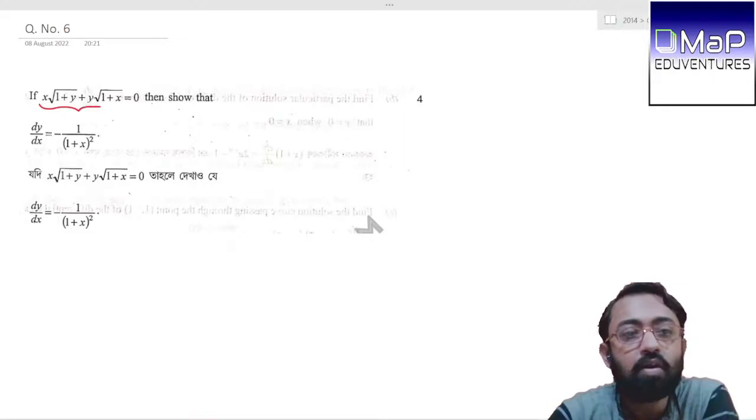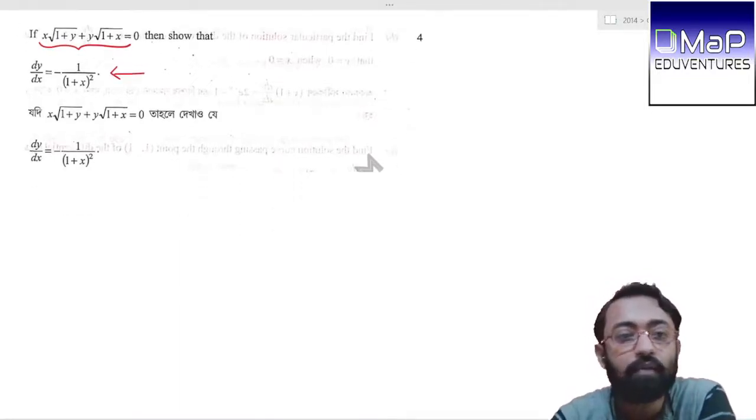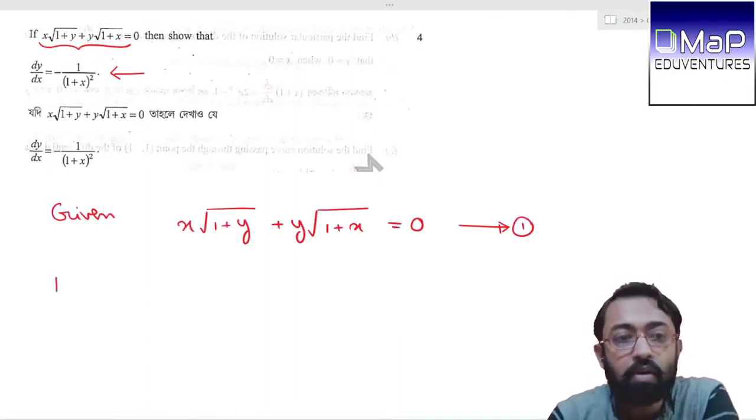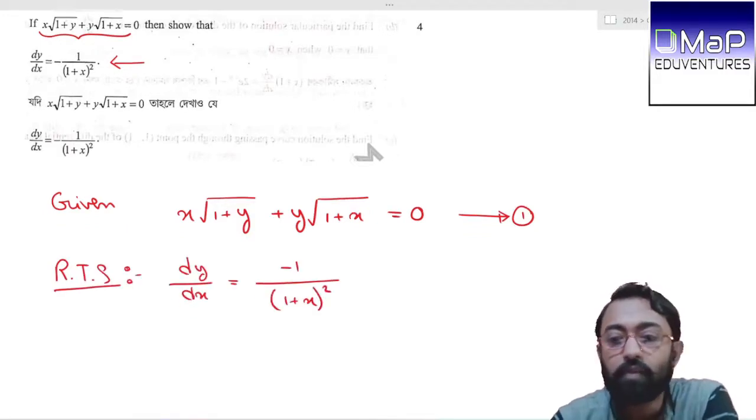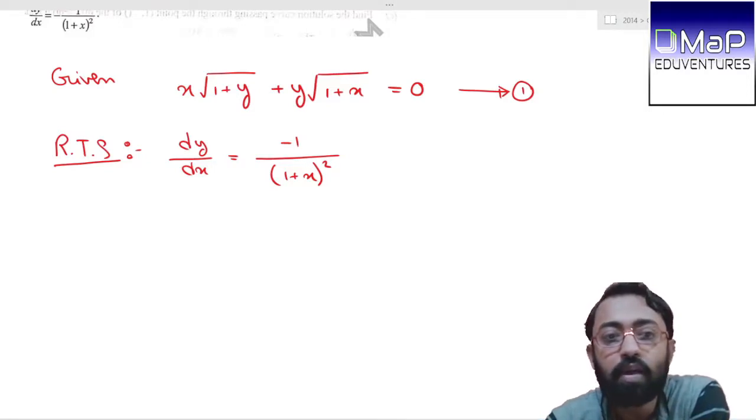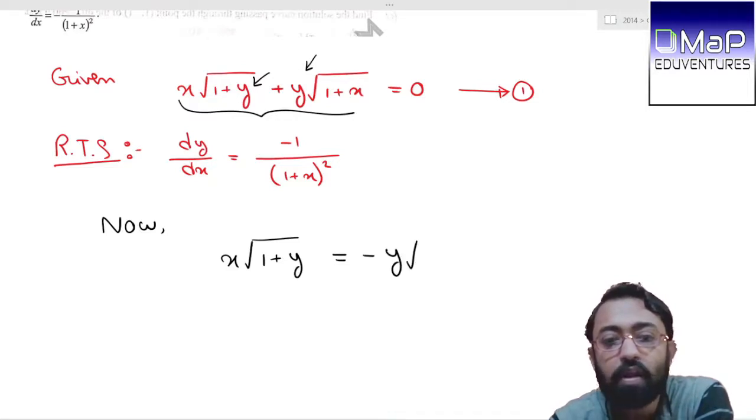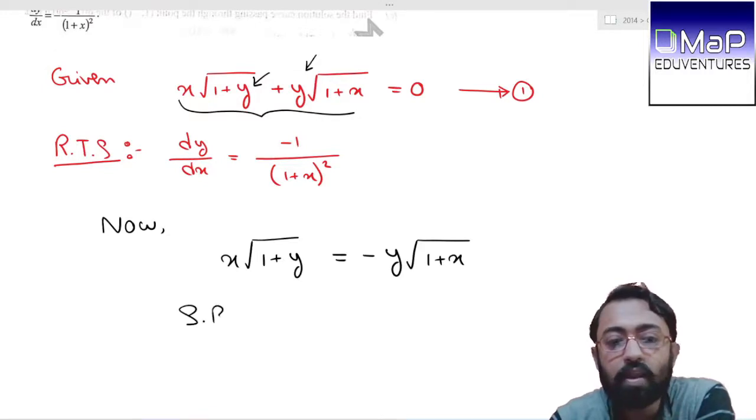Question 6: If x times square root of 1 plus y plus y times square root of 1 plus x equals zero, then show that dy/dx equals negative 1 over 1 plus x whole square. Given is this equation, and we are required to show this result. Note that dy/dx equals in terms of only x on the right hand side. Since we see two y terms in the given equation under square roots, if we take both y terms to one side, dy/dx will be in complicated form because of the square root.